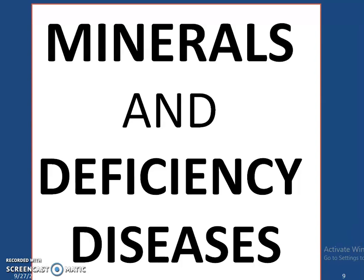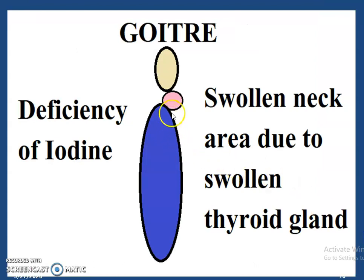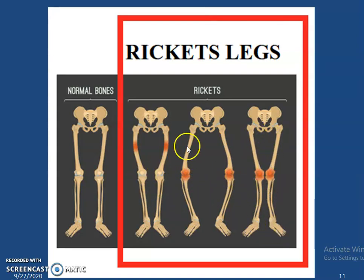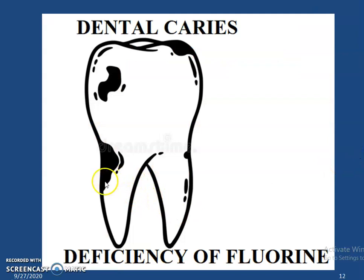Minerals and deficiency diseases — this is what we are going to learn now. There is another person who has a swollen neck area, and this disease is known as goiter. It is caused due to deficiency of iodine in our diet. Then, there are people who have deformed legs — the thigh bones, knees, and entire leg can be deformed — and this type of disease is known as rickets, also caused due to mineral deficiency. You can also see a person with caries on their teeth, the black spots, and this disease is called dental caries, caused due to deficiency of the mineral fluorine.